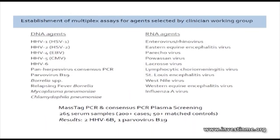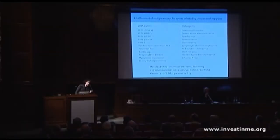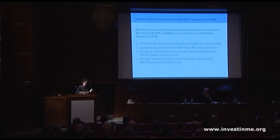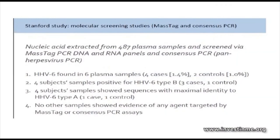Our panels go after a set of DNA and RNA agents selected by our clinician working group as a starting point. We have found very little — much to our surprise — in the serum of these individuals: HHV6 type B, and parvovirus B19. Both agents, by the way, can be associated with autoimmune scenarios. Using high-throughput sequencing, we found very little overall, and the HHV6 that was found was not significantly different than the prevalence in controls.